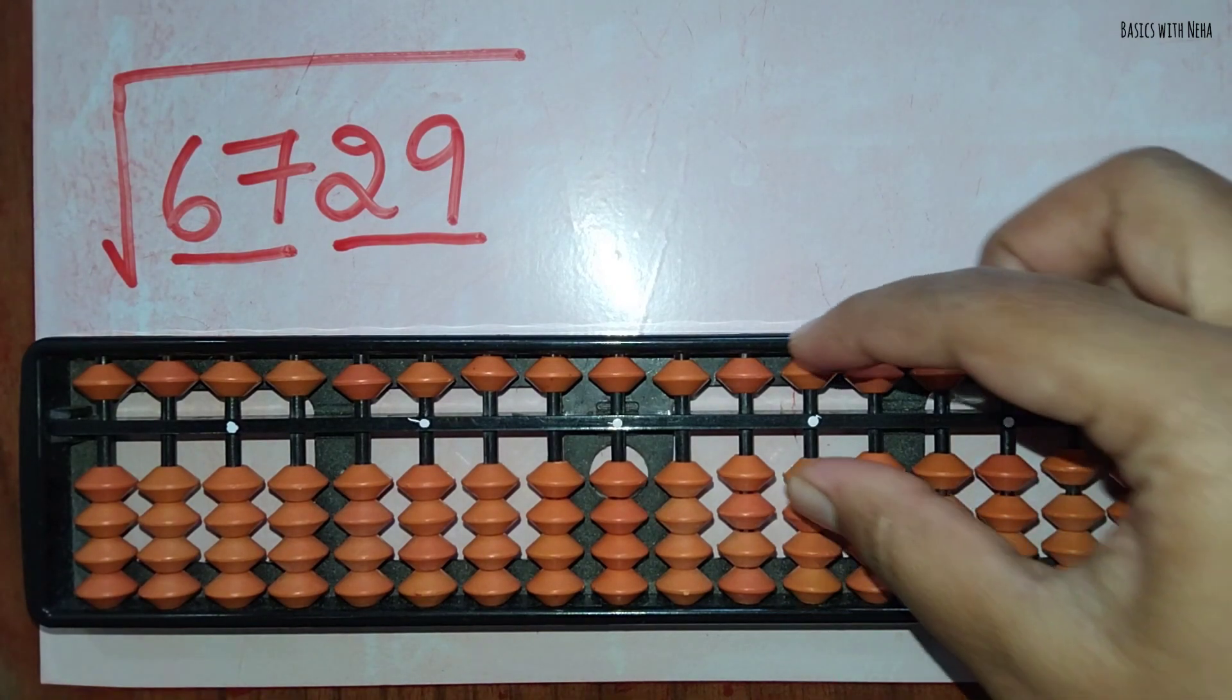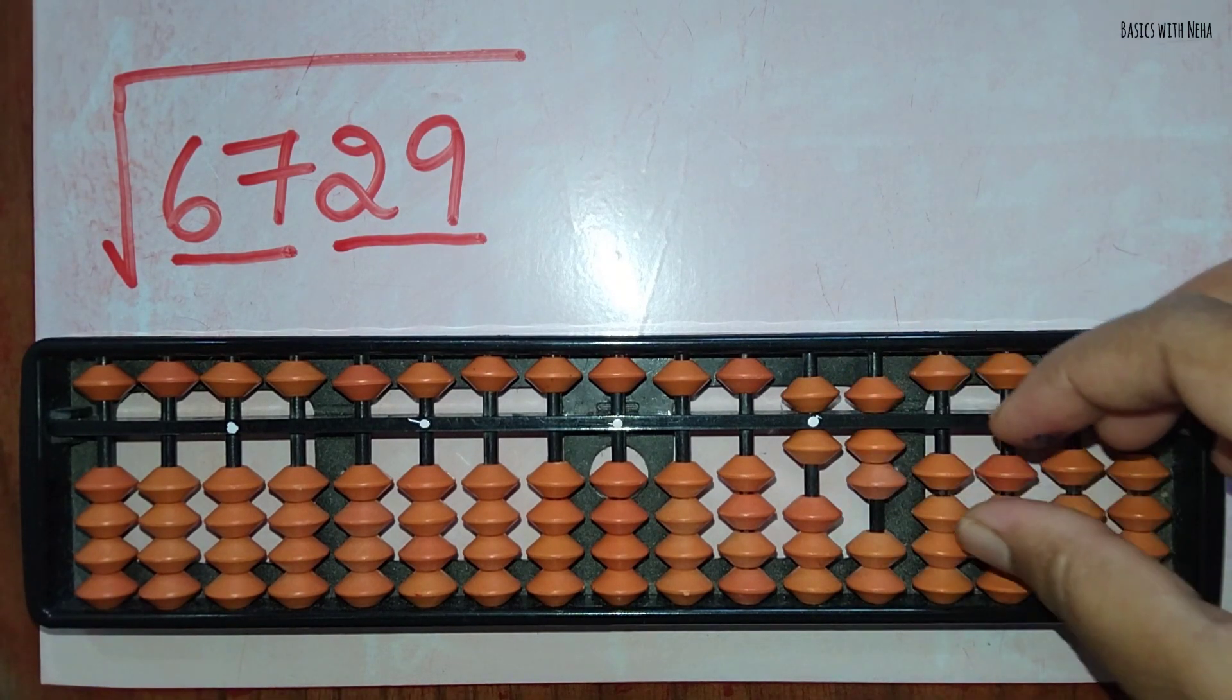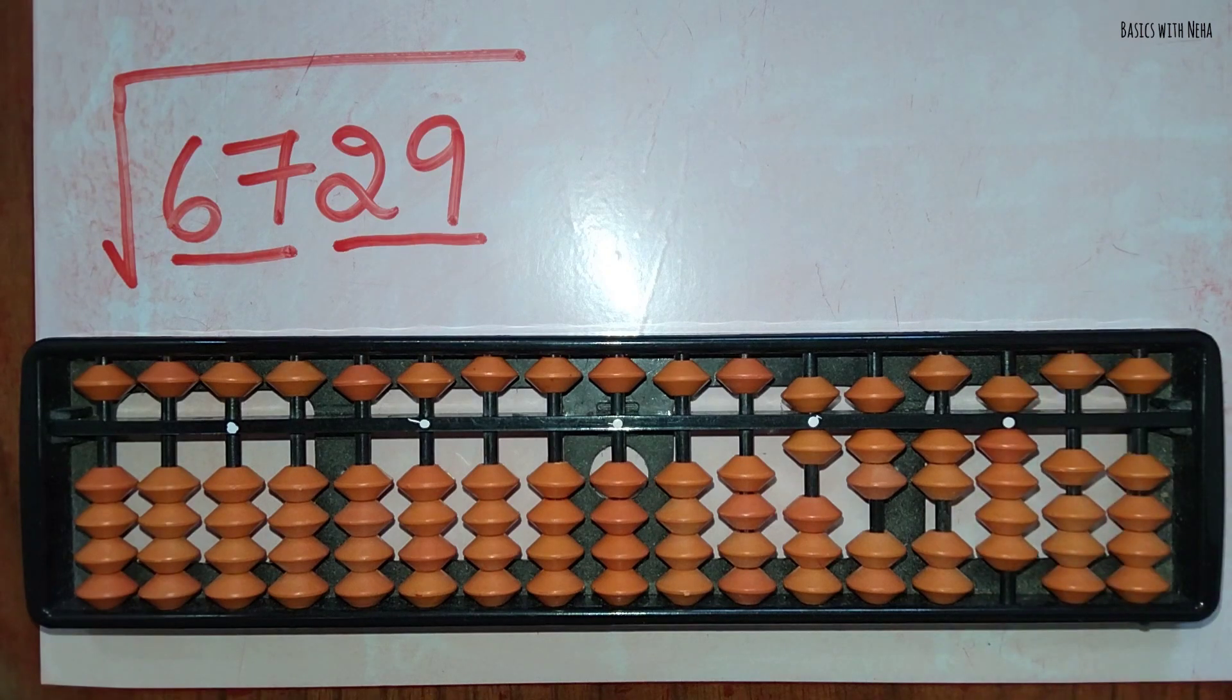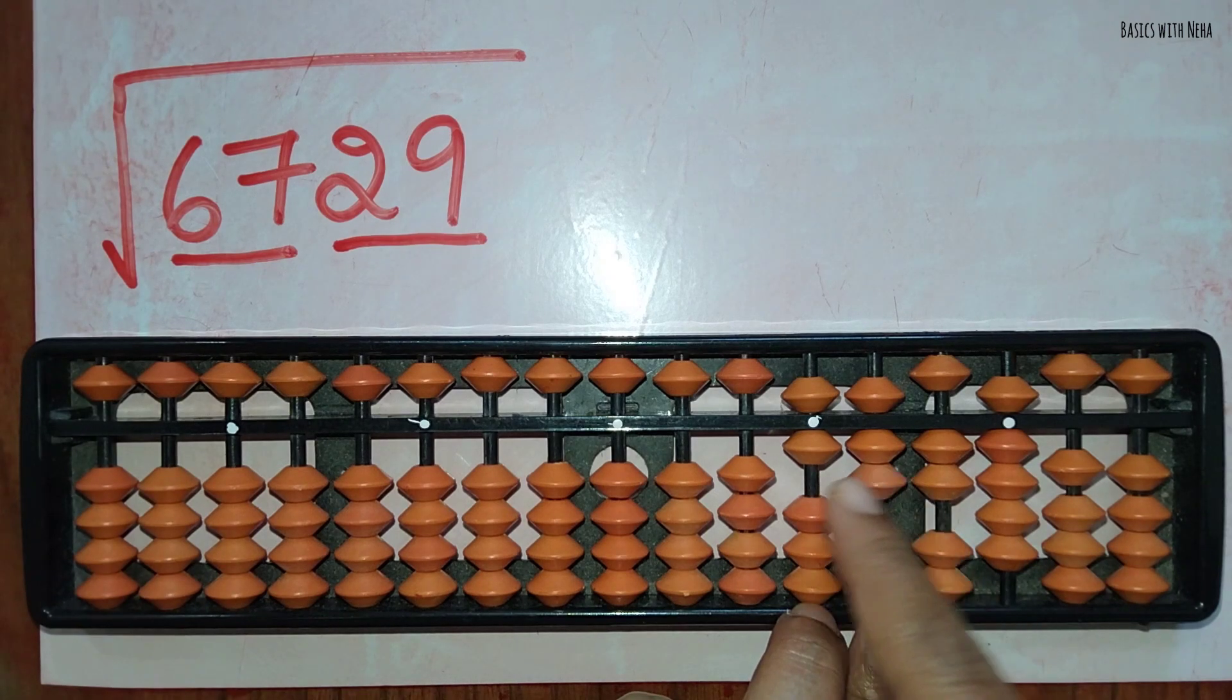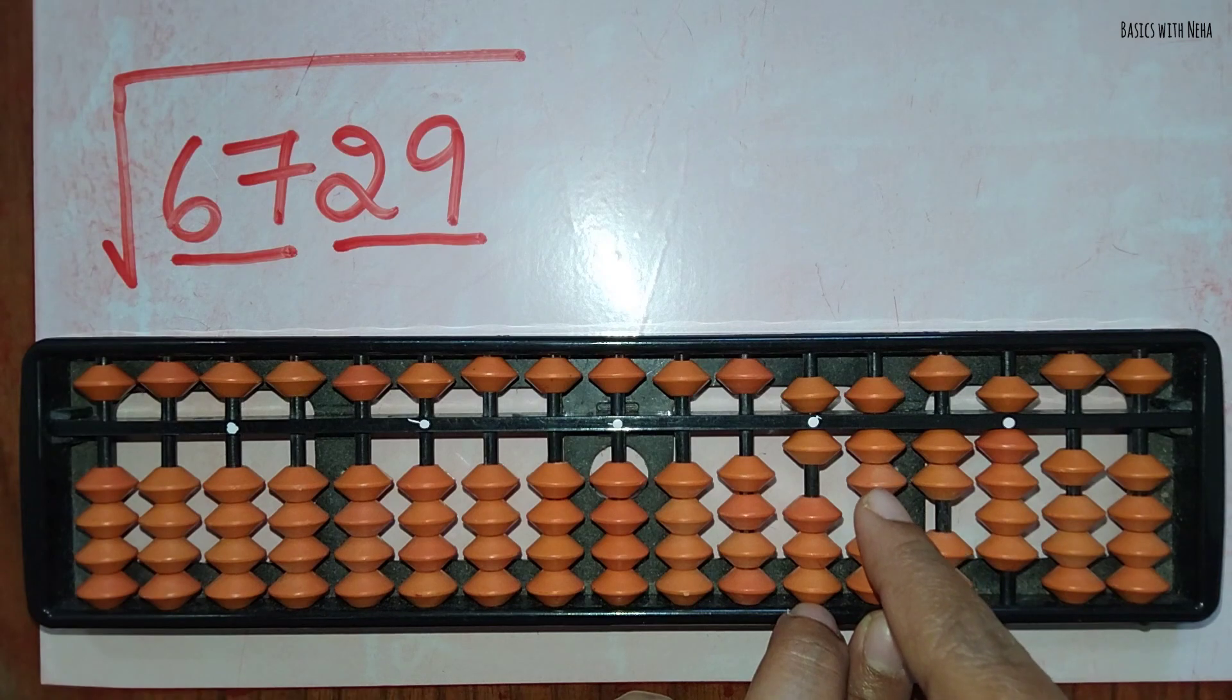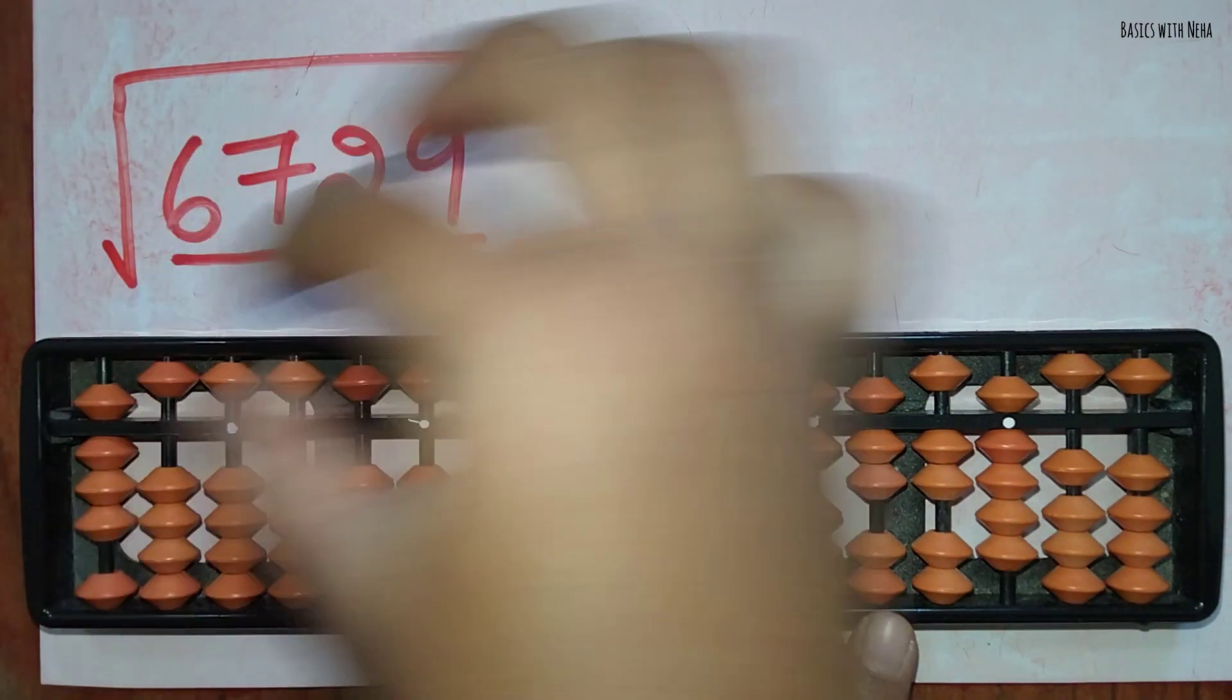I'm going to take in the right side of the tool 6729. Now I have these two numbers. I have to take the nearest square root of this number. Like it is 67, so eight eights are 64, so I'm going to take eight.